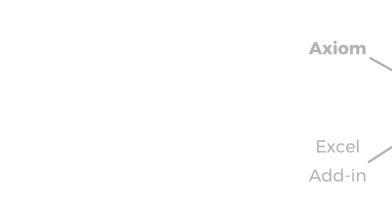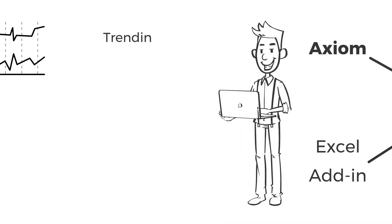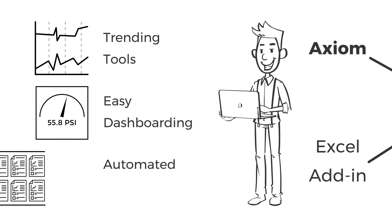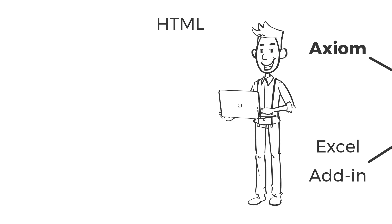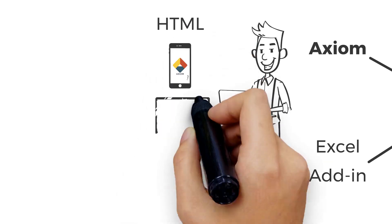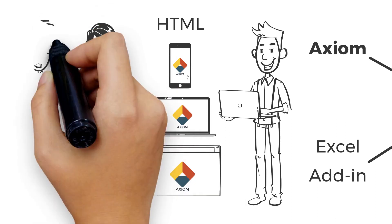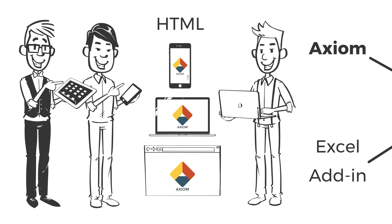Packed full of features, Axiom includes incredibly powerful trending tools, simple drag-and-drop dashboarding, automated reporting, and more. And since it's built using HTML, you can use Axiom on your smartphone, laptop, or from any modern web browser. Both engineers and executives alike praise Axiom for its powerful toolset and short learning curve.